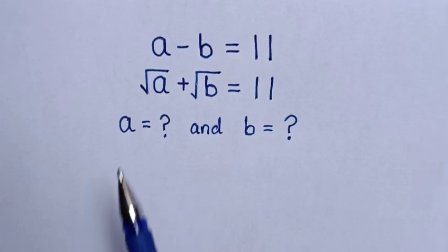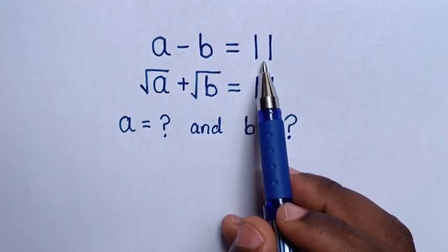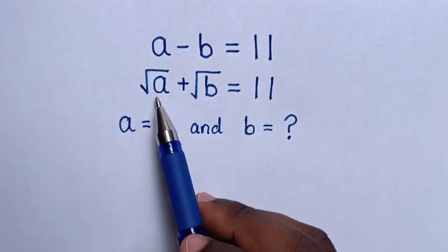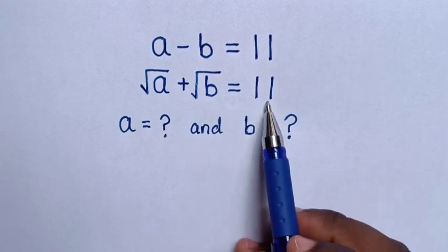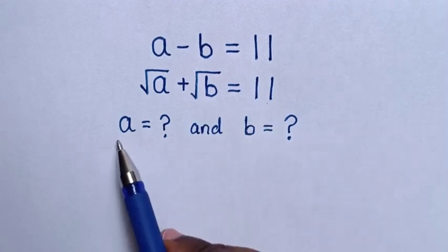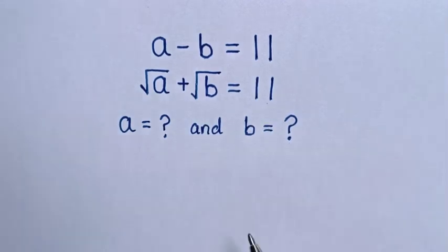Hello! Given that a minus b is equal to 11, and square root of a plus square root of b is equal to 11. We need to find the value of a and the value of b.